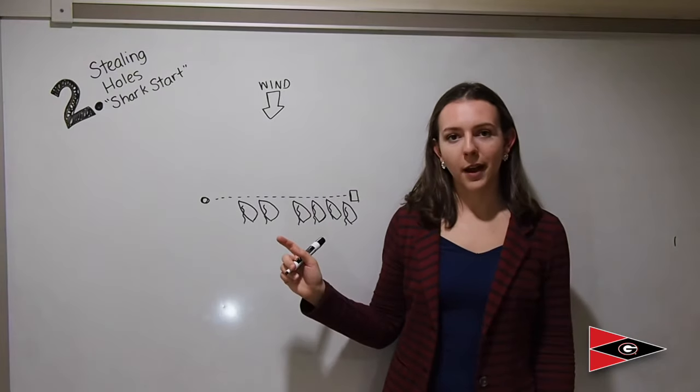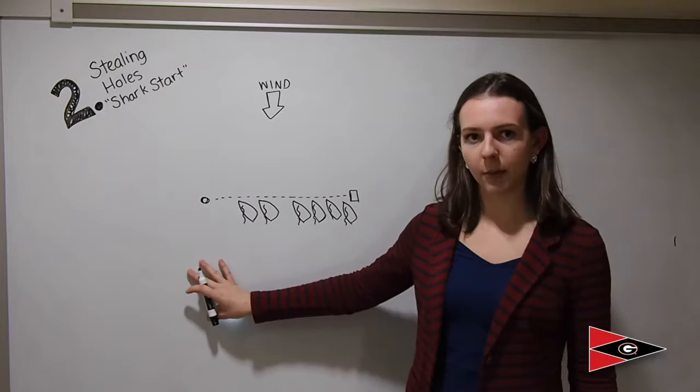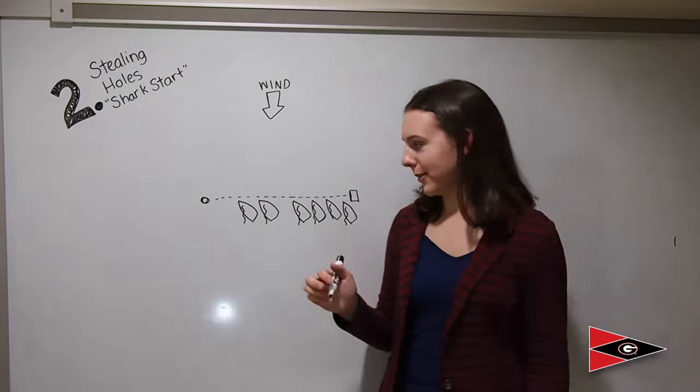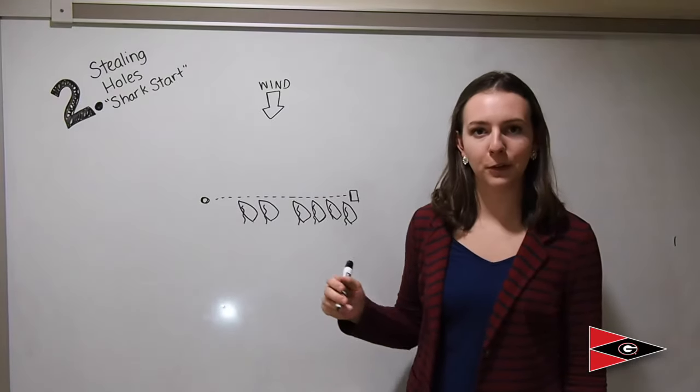This next strategy works really well when you have a lot of people in the fleet who are parking on the line and really clogging things up. I've coined the term shark start because essentially what you're going to do is stalk the fleet from below and then steal a hole at the last second.